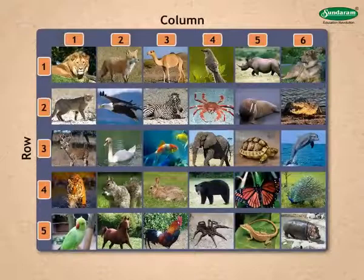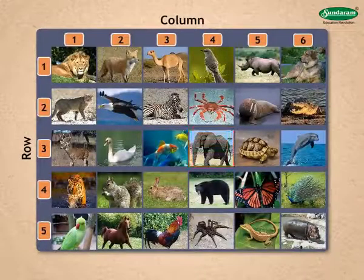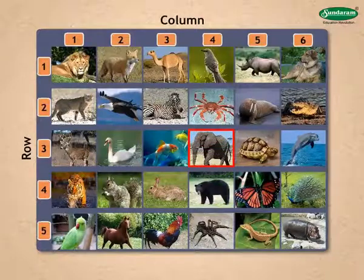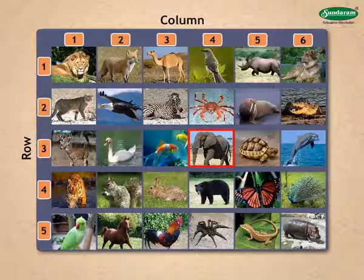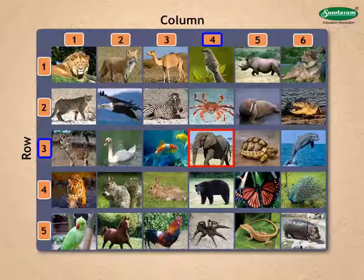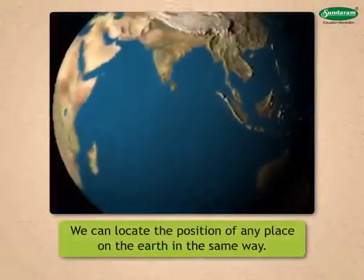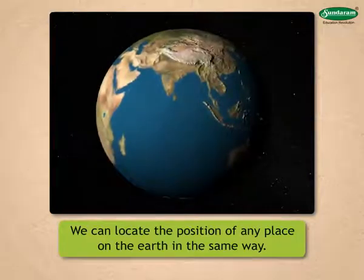Pictures of some animals and birds are given in the following chart. How will you tell your friend where the elephant is? Making use of the numbered rows and columns, you can tell that the elephant is in the third row and fourth column. In this way, you can locate the position of the other animals too. We can locate the position of any place on earth in the same way.